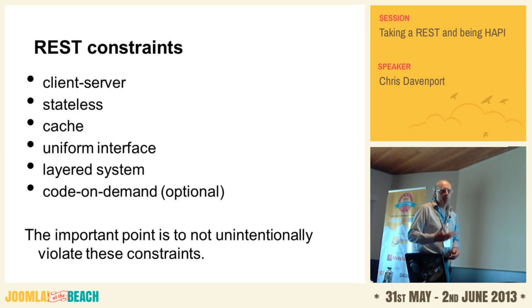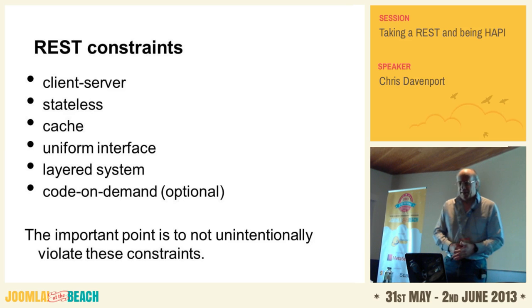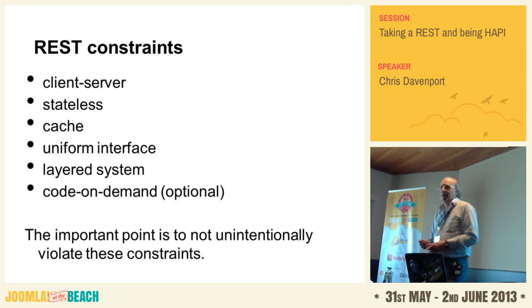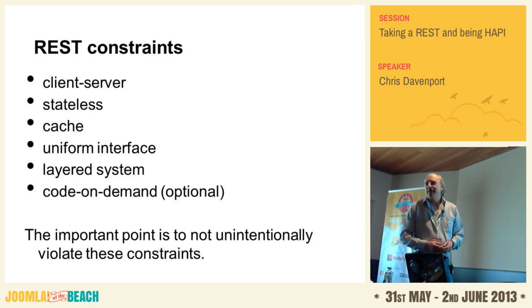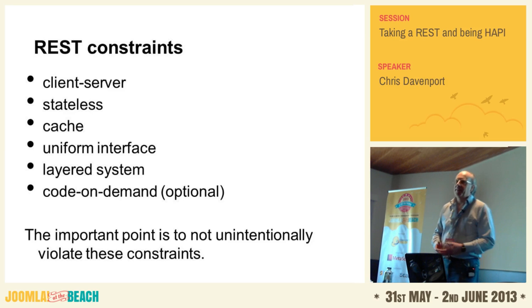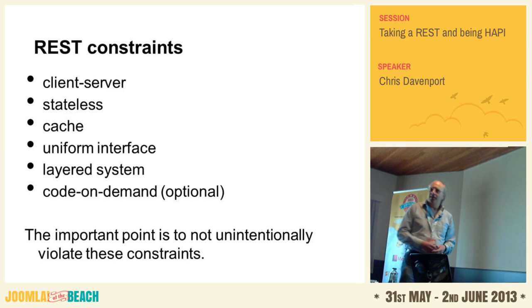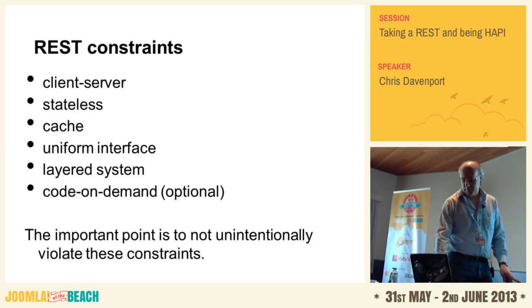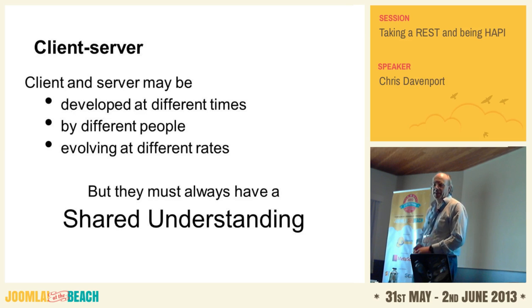Fielding grouped these constraints into six categories. I'm not going to go into detail on all of these — there are massive amounts of resources on the internet that cover them in extreme detail. The important point I want to make is that when we're designing applications and building things like Joomla, we shouldn't unintentionally violate these constraints, because if we do so, it hampers our objective of building internet-scale distributed hypermedia systems. I want to pick out one or two constraints that are particularly relevant to what we're doing right now with web services.